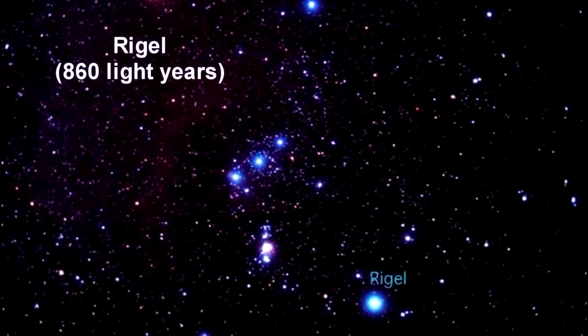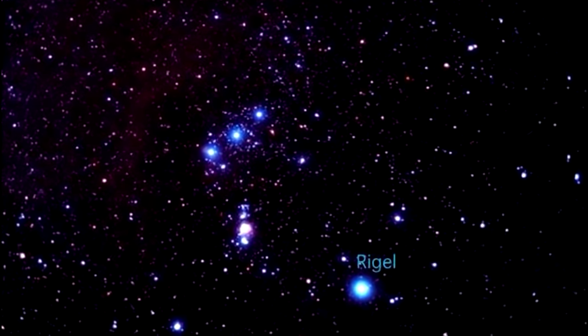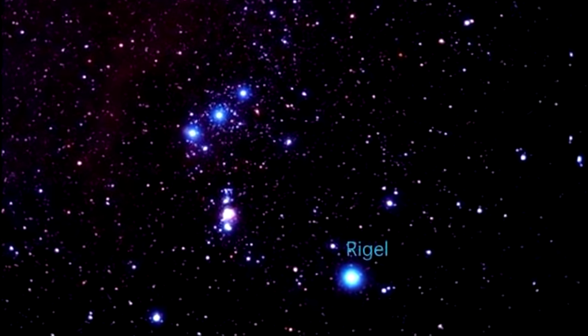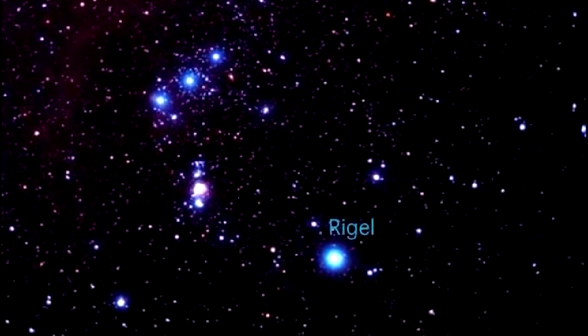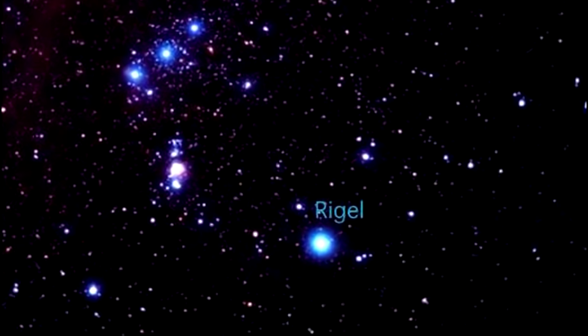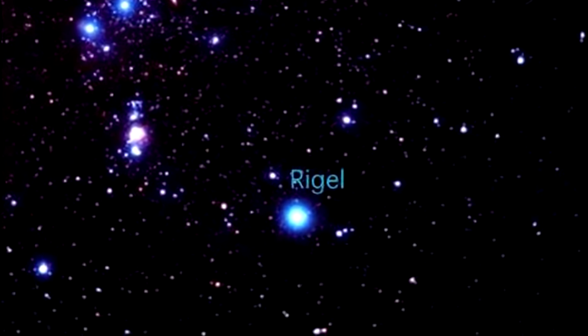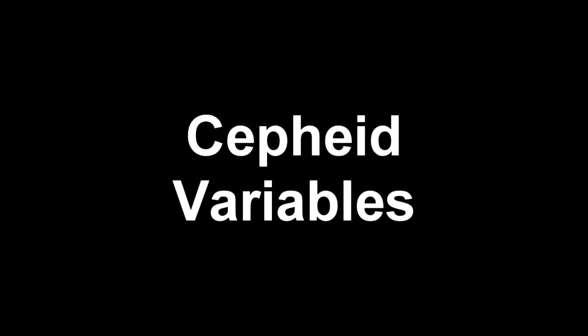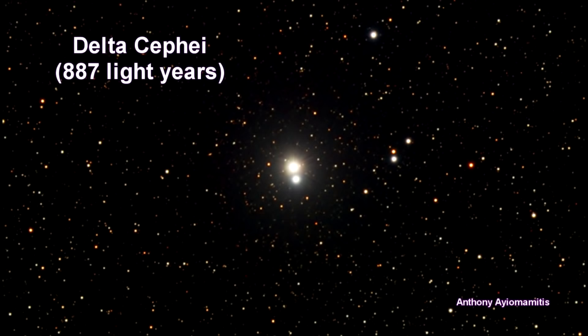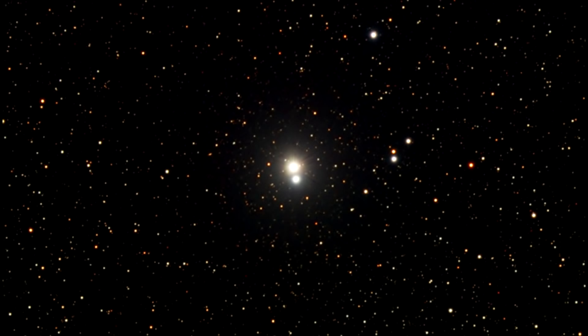Rigel is the sixth brightest star in the sky. Since 1943, the spectrum of this star has served as one of the stable anchor points by which other stars are classified. Like Polaris, Delta Cephe is a binary star system and a Cepheid variable star. Cepheid stars undergo periodic changes in luminosity. Delta Cephe is among the closest stars of this type of variable, with only Polaris being closer.